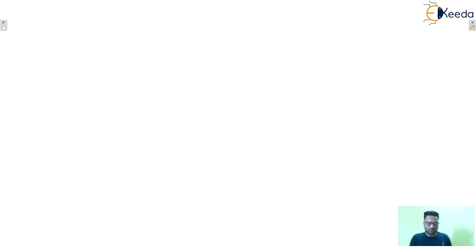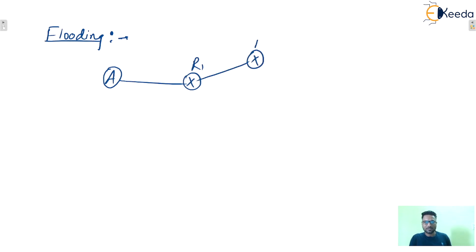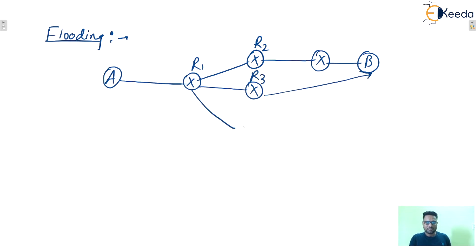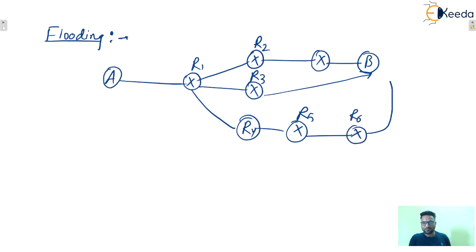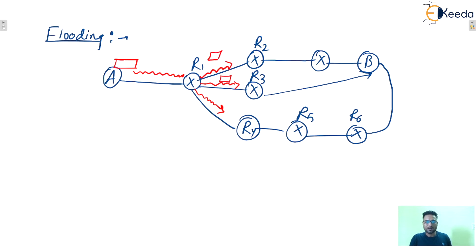Now one more concept is known as flooding. Flooding means: let's say this is station A, connected to router R1, which is connected to router R2, then one more router R3, and finally station B as destination. There is also router R4, router R5, and router R6 — some network. Flooding means one packet is forwarded by station A, it goes to R1, and then it will be forwarded in all outgoing directions. One copy will be forwarded in all directions except the direction from which it arrived. Whenever it comes to any router, it forwards it in all remaining outgoing directions except the direction from which it came.